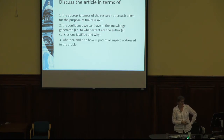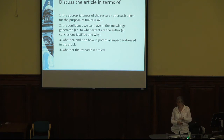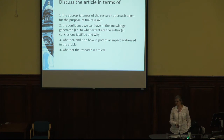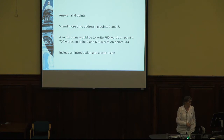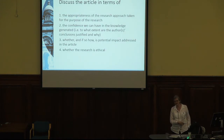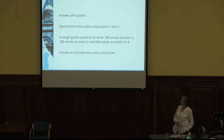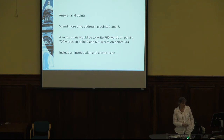If you're asked to talk about four things, talk about four things — if you don't, you cannot possibly do extremely well. But spend more time on parts one and two, where the meat of the response should be. A rough guide — and I do mean rough — would be about 700 words on part one, 700 words on part two, and about 600 words on parts three and four. Seven plus seven plus six adds up to 2,000, but you'll also need words for an introduction and conclusion.